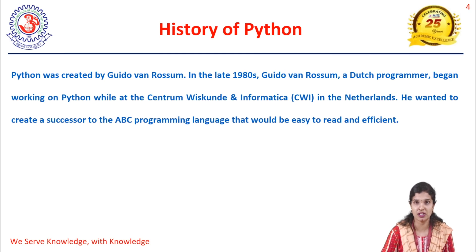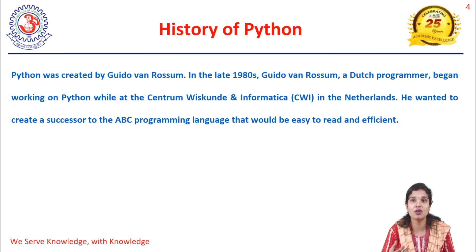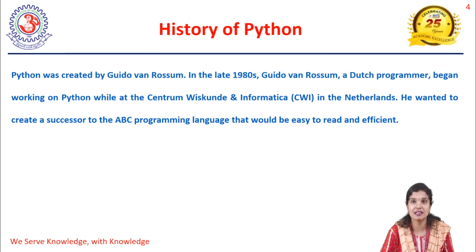Python is an open source project. The reason Guido named it 'Python' is that he was a fan of the BBC TV show 'Monty Python's Flying Circus.' He wanted to give his invention a similarly mysterious and memorable name, so he named it Python.